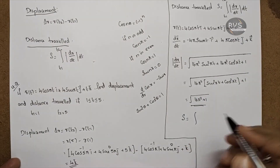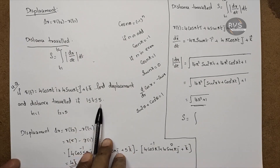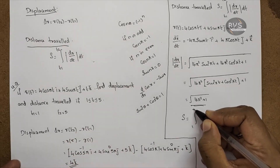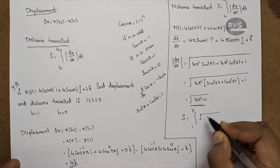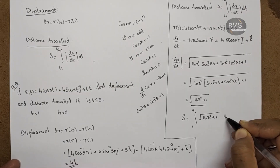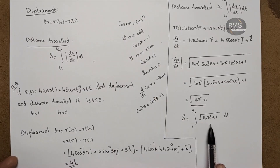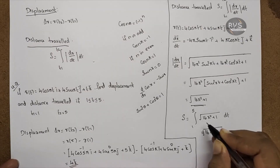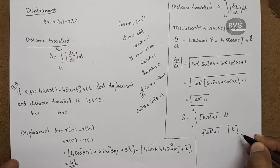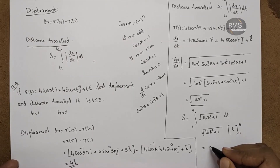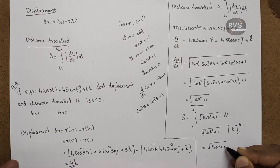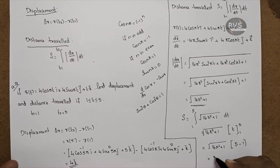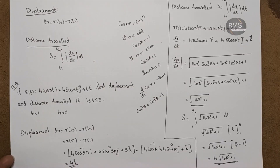The distance traveled s equals the integral from t1=1 to t2=5 of the modulus of dr/dt, which is the square root of 16π² + 1, dt. Since 16π² + 1 is constant, this equals the square root of 16π² + 1 times [t] evaluated from 1 to 5, which gives (5 - 1) times the square root of 16π² + 1, equal to 4√(16π² + 1).